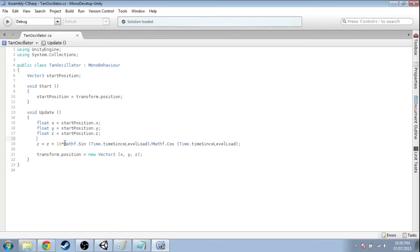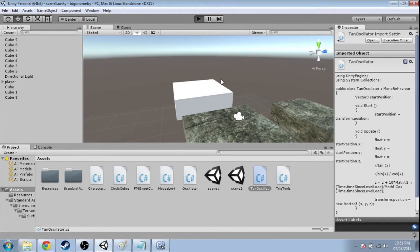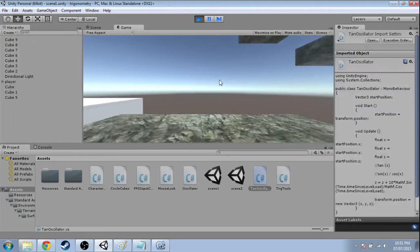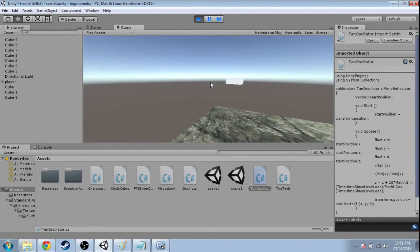So instead of tan of X, we're going to use sine of X over cos of X. Let's see if that's an interesting way to move. I'm going to save it and press play. Okay, it's actually doing the same thing.